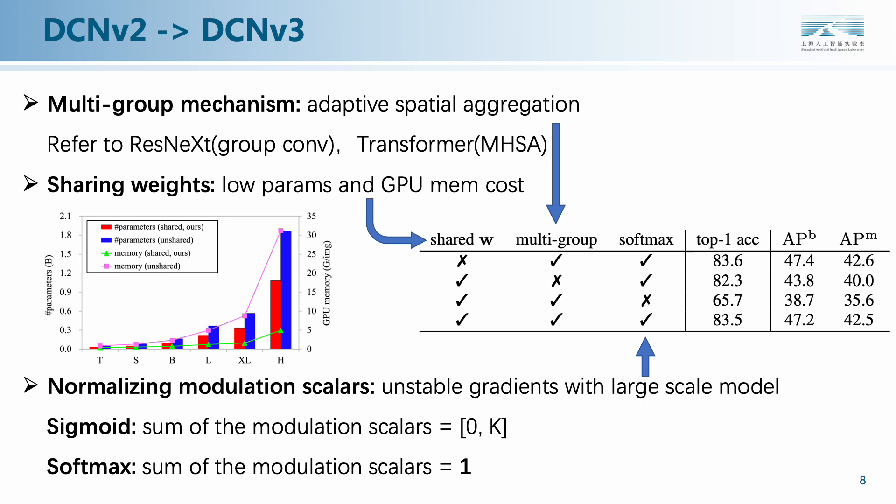The DCNV3 operator relies on three main improvements to the DCNV2 operator. The first is the multi-group mechanism. Inspired by the grouping convolution of ResNeXT and multi-headed self-attention of ViT, we introduce the grouping mechanism to achieve adaptive aggregation of spatial dimensions. However, introducing it directly would lead to a spike in computational complexity and GPU memory. To remedy this, we share the pointwise projection weights when sampling feature points. As shown in the red part of the figure, computational complexity and GPU memory are dramatically reduced with only a 0.1 drop in accuracy. In addition, we found that the normalizing modulation of sigmoid when scaling the model parameters makes the gradients unstable during training and leads to a significant decrease in accuracy. This can be effectively mitigated by simply replacing it.